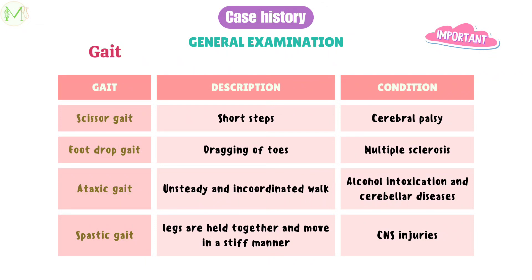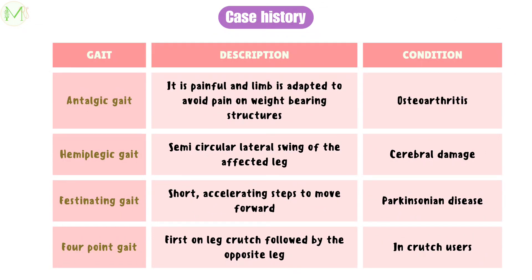Spastic gait is seen in CNS injuries. In this type of gait, the legs are held together and they move in a stiffer manner. Next is antalgic gait, which is seen in osteoarthritis. It is a type of painful gait where the limb is adapted in order to avoid pain on weight-bearing structures like the hip, knee, or ankle.